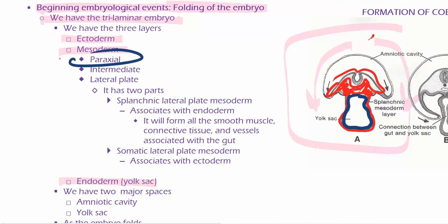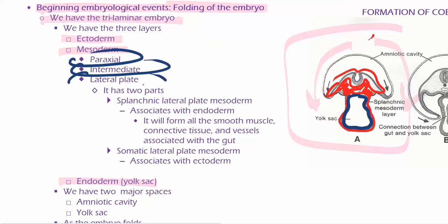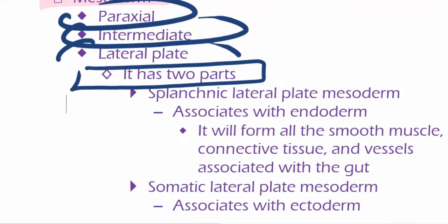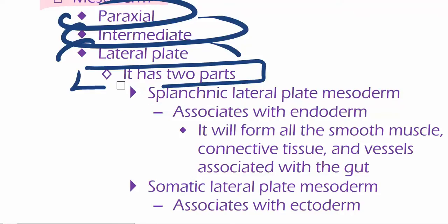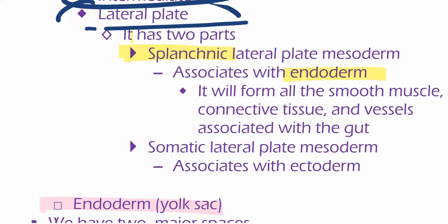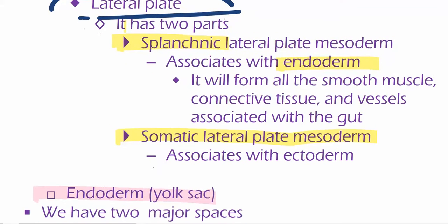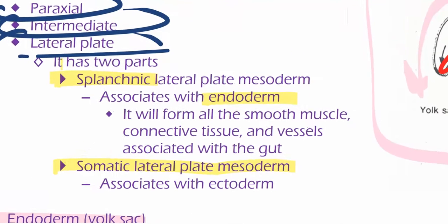When we talk about the mesoderm, we have the paraxial, the intermediate, and the lateral plate mesoderm. The lateral plate mesoderm has two parts: we have the splanchnic one, which is associated with endoderm, and the somatic lateral plate mesoderm, which is associated with ectoderm. The splanchnic lateral plate mesoderm is going to cover the future gut tube.